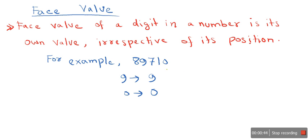So the face value of any digit will be the digit itself. That is, face value of 1 will be 1. So now we have understood what is face value. Now let's look at what is place value.